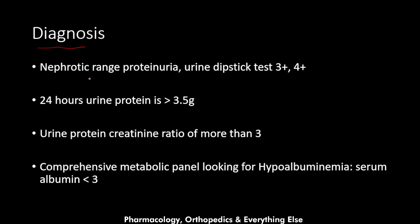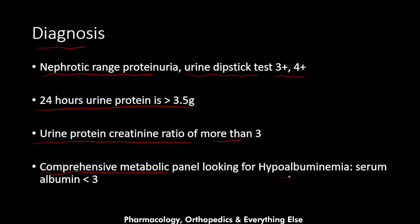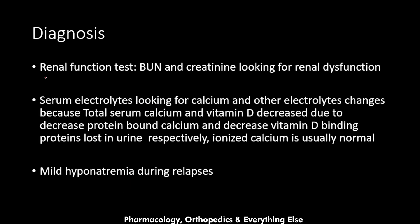For diagnosis, urine dipstick testing shows nephrotic-range proteinuria of three or four pluses. A 24-hour urine protein is more than 3.5 grams, and a urine protein-to-creatinine ratio of more than 3. A comprehensive metabolic panel looks for hypoalbuminemia, with serum albumin less than 3. Renal function tests include blood urea nitrogen and creatinine looking for renal dysfunction. Serum electrolytes are checked for calcium and other changes, as these are protein-bound — mild hyponatremia may be found during relapses.